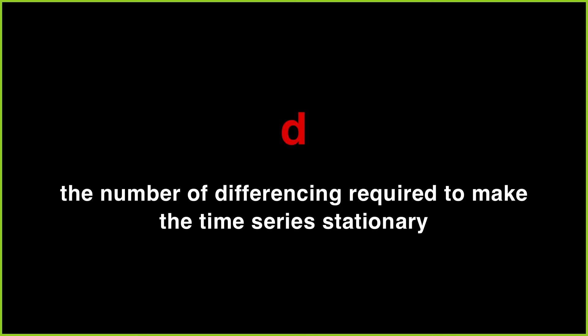P refers to the order of the autoregressive term. D is the order of differencing in order to make the time series stationary. And Q is the order of the moving average term. We're going to go through all three of these, and I'm going to explain how they are calculated and how you can get these values mapped perfectly to your specific problem.